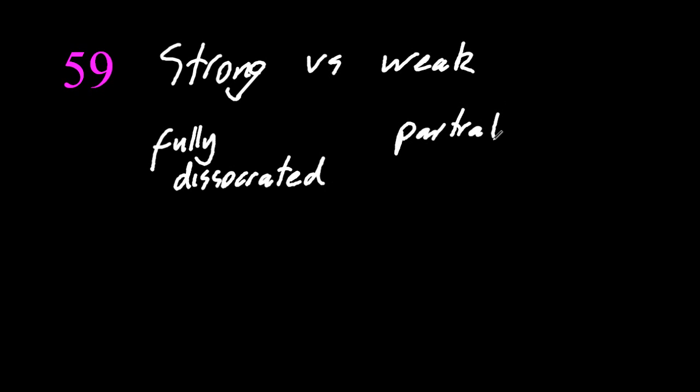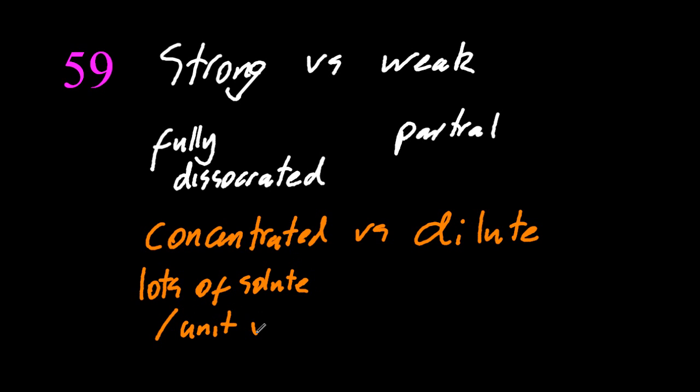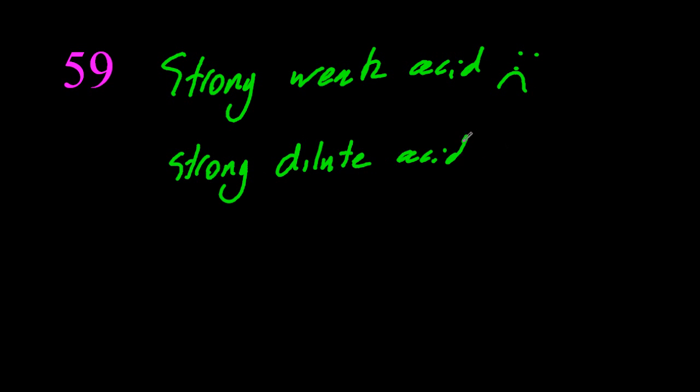59, strong versus weak. Strong means it's fully dissociated, and weak means it's partially dissociated. Concentrated versus dilute. Well, concentrated means there's lots of the solute in the solution, and dilute means there's not much solute in the solution. So then, is it possible to have a strong weak acid? Nope, it's not. Is it possible to have a strong dilute acid? Yes, it is.